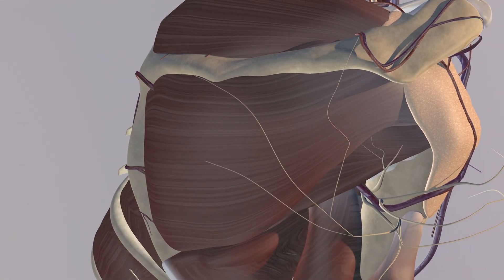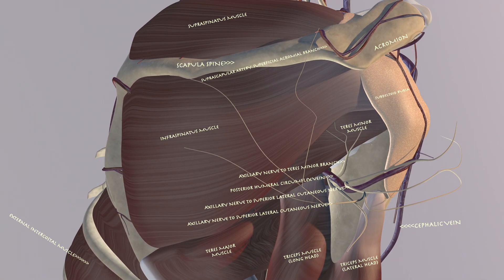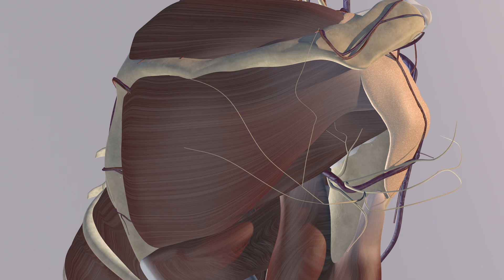The suprascapular artery actually goes through the spinoglenoid notch, feeding the infraspinatus muscle as well. You can appreciate the subdeltoid bursa, infraspinatus muscle, teres minor, and teres major. You can appreciate the long and lateral head of the tricep muscle as well.